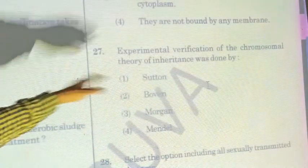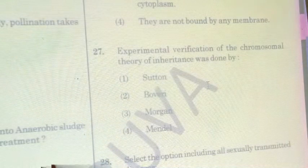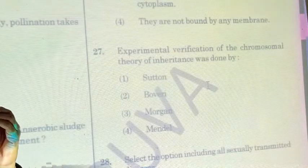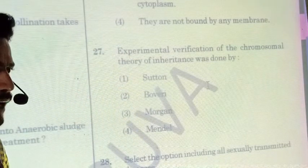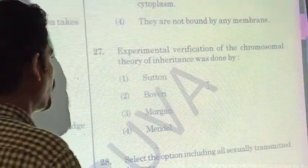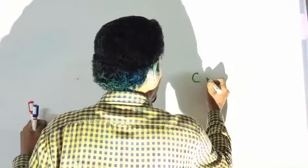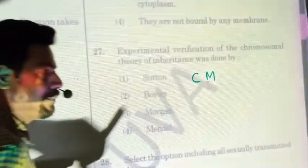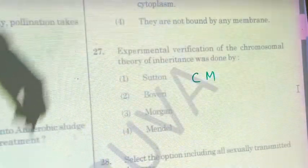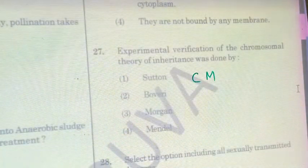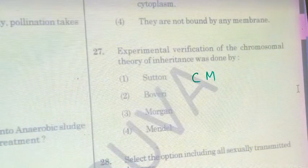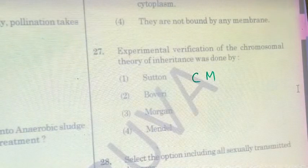Question twenty-seven: experimental verification of chromosome theory was done by Thomas Hunt Morgan, popularly known as the 'fly man of genetics.' The unit centimorgan (cM) — the map unit measuring distance between genes — is named in his honor. Morgan performed experimental verification of Mendel's experiments using Drosophila.